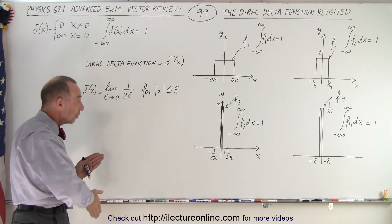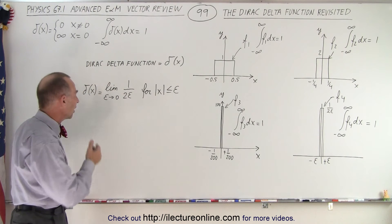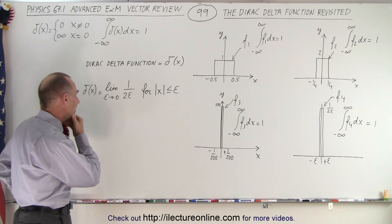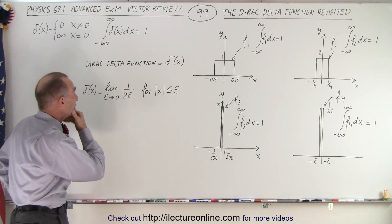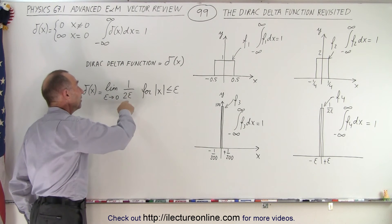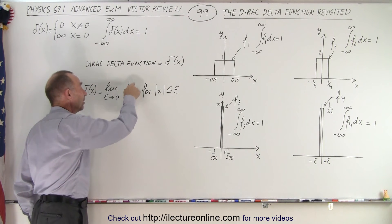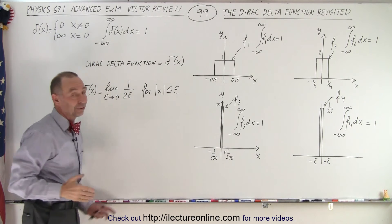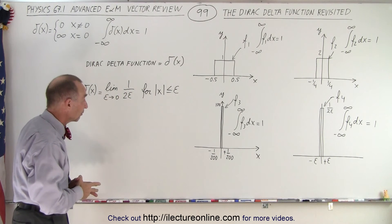We just keep on making it skinnier, so that the height goes to 1 over 2 epsilon. That's what the Dirac delta function is, because that represents the height. And when epsilon goes to 0, this will become infinite. And of course, that's how we define the Dirac delta function.